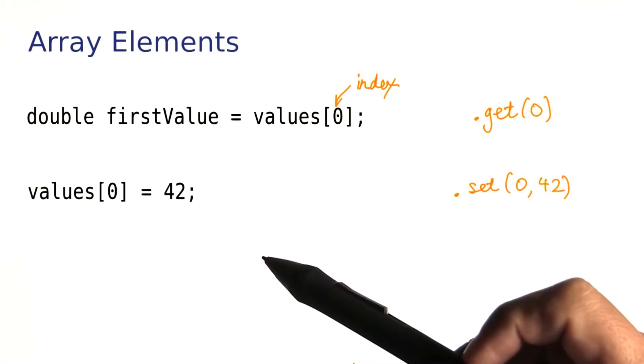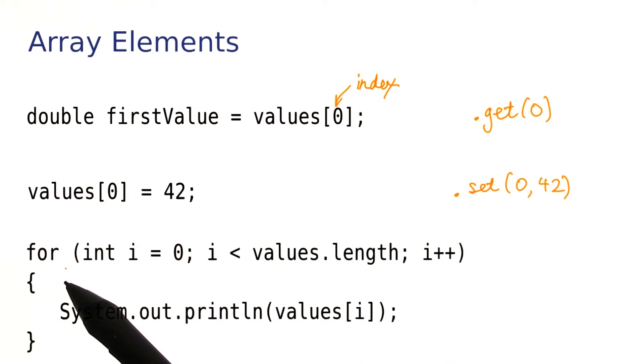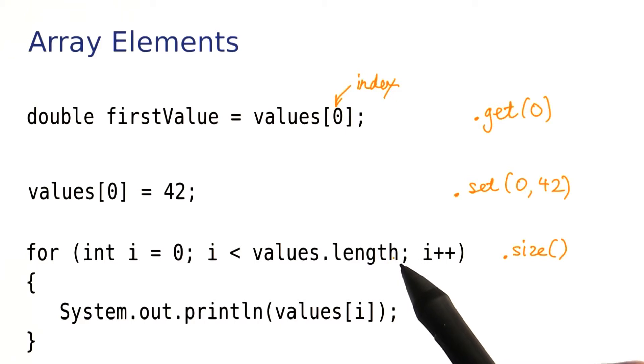How can we look at all of the elements of an array? It's very similar as with array lists. Here we have a for loop. We want to look at values bracket i, and i goes from 0 to 1 less than the length of the array. With an array list, we would have called dot size. Note that the length does not have parentheses. That's just an oddity for historical reasons.